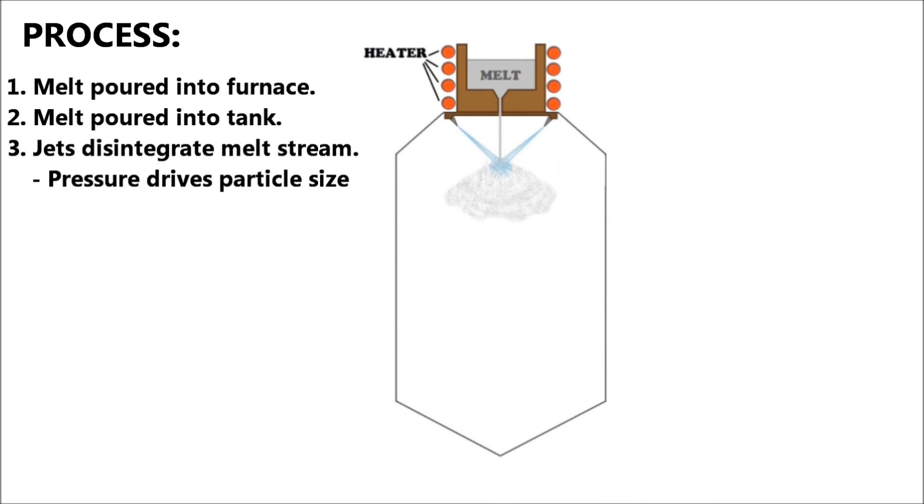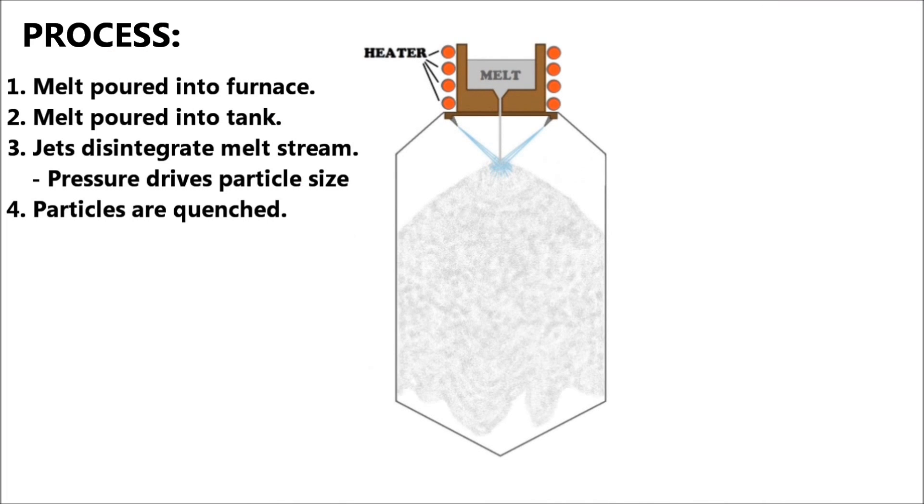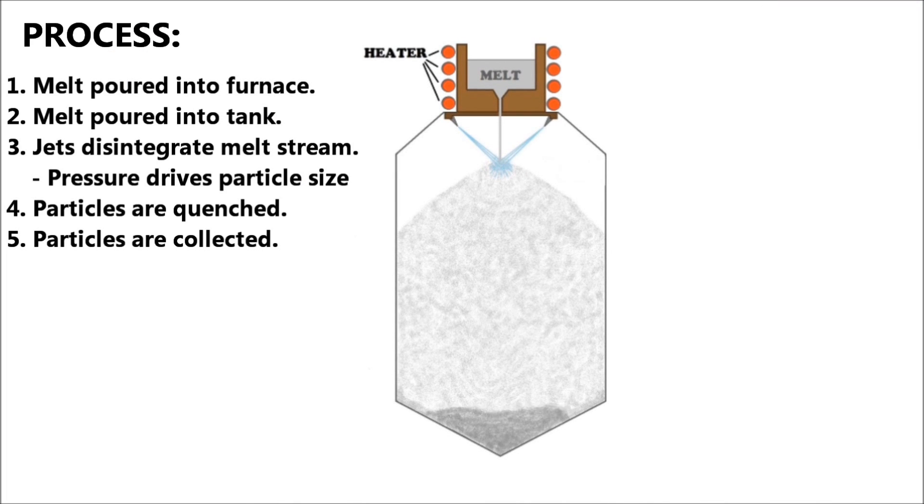Once the melt is disintegrated the particles are rapidly quenched and solidified. As you can see in this image this process produces rough and irregularly shaped particles. Once the particles solidify they are collected at the bottom of the atomization tank.